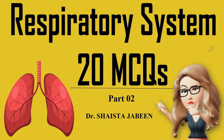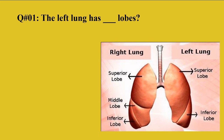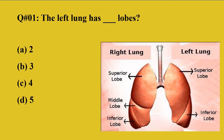Let's learn about some MCQs on the respiratory system. Question 1: The left lung has how many lobes? A: 2, B: 3, C: 4, D: 5. The right option is 2. The left lung has 2 lobes — the superior lobe and inferior lobe — while the right lung has 3 lobes.